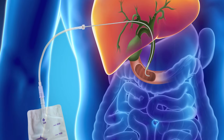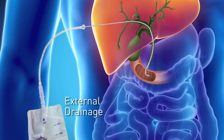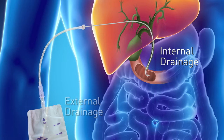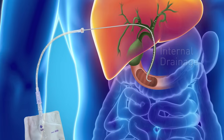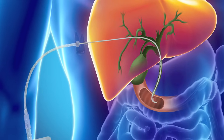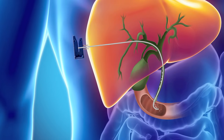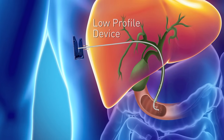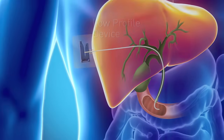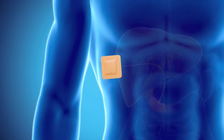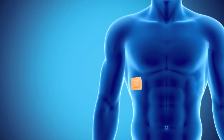When the procedure is complete, the tube will allow bile to drain externally to a bile bag. If good internal drainage can be achieved to your small intestine, a bile bag may not be necessary. In this case, a low-profile device can be applied to the external end, making the tube comfortable and discreet.